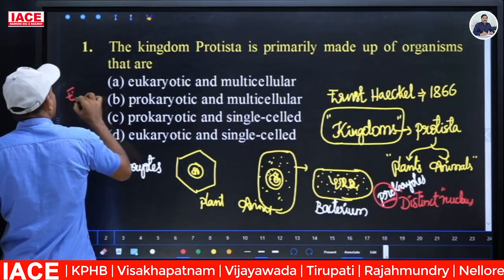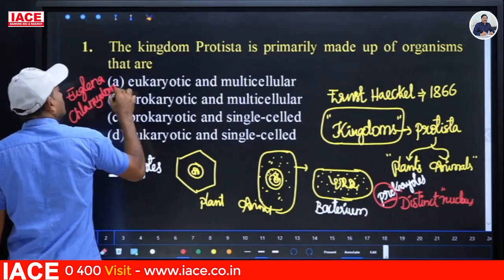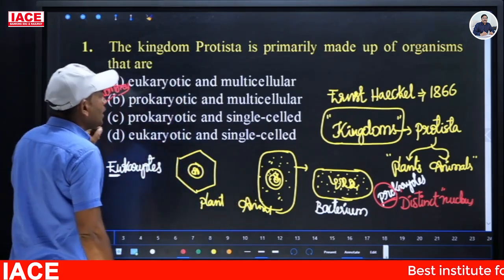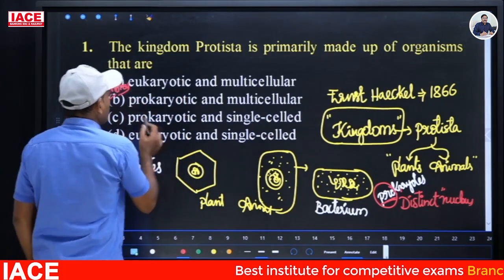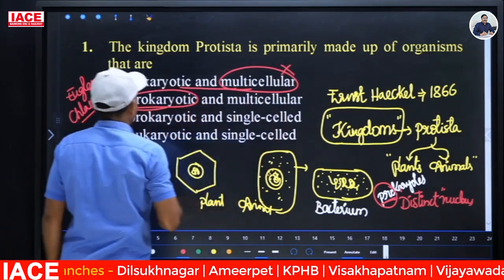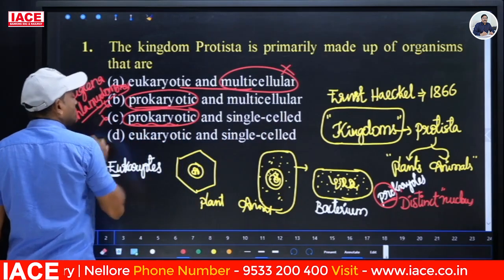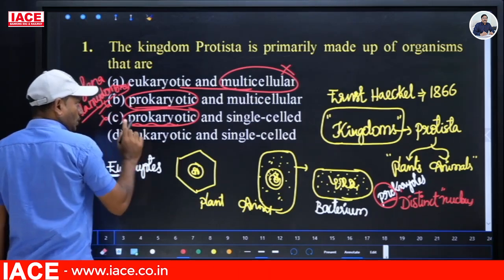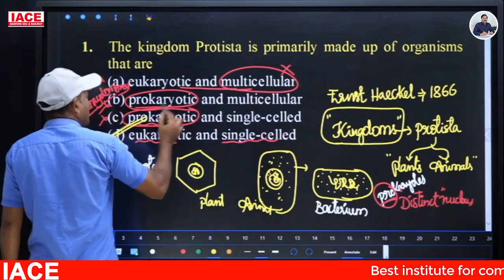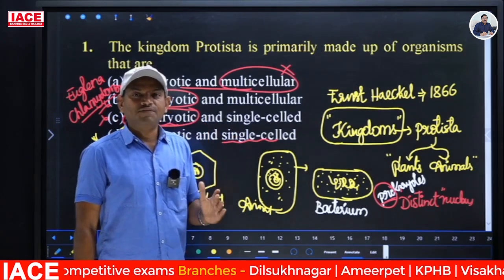Under Protista, all unicellular organisms showing characters of both plants and animals are included. Examples include Euglena and Chlamydomonas. All these come under option D — eukaryotic and single cell. So the answer for the first question is option D.